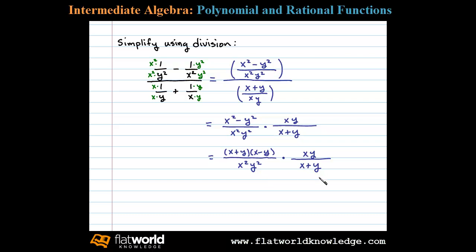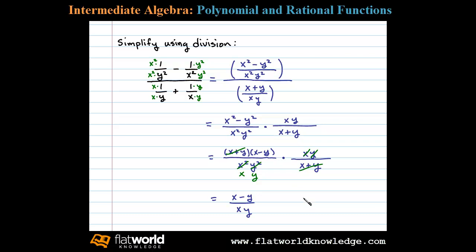We're assuming all variable expressions in the denominator do not evaluate to zero, so we can cancel common factors. We divide out a factor of x plus y, and divide out a factor of x and y. That leaves us with x minus y over x y, which is our final simplified result of the original complex fraction.